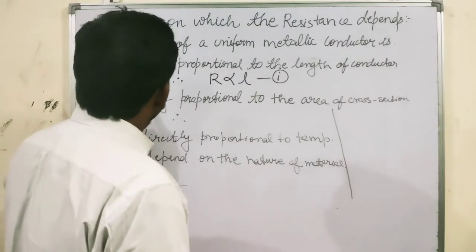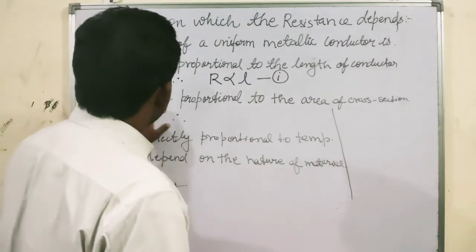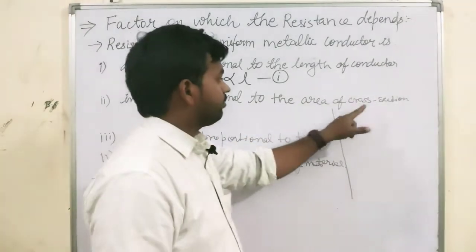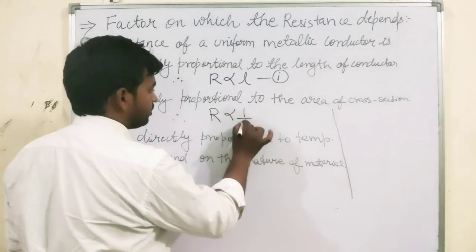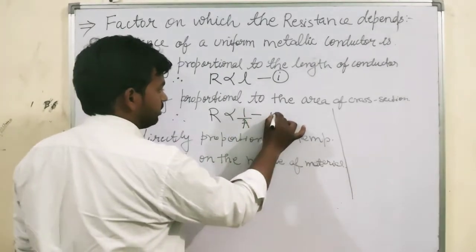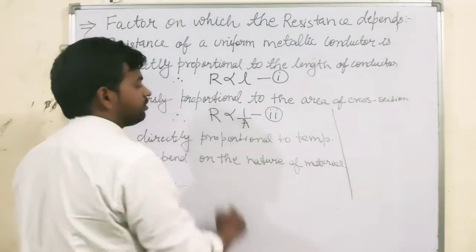Now, resistance is inversely proportional to the area of cross-section, that is R is inversely proportional to the area of cross-section. That is our second equation.